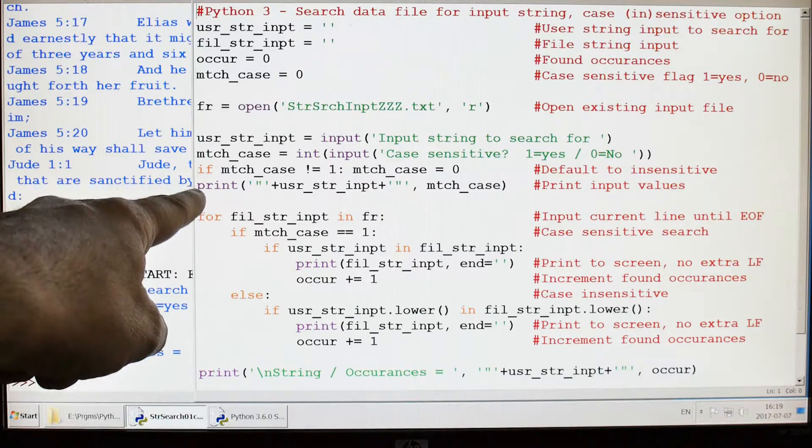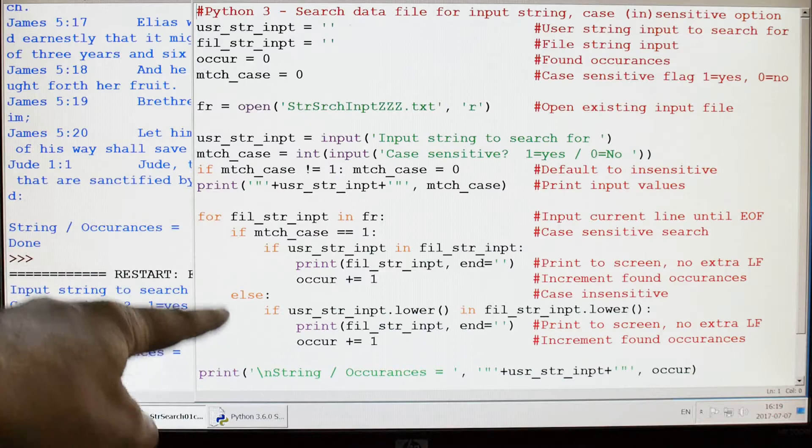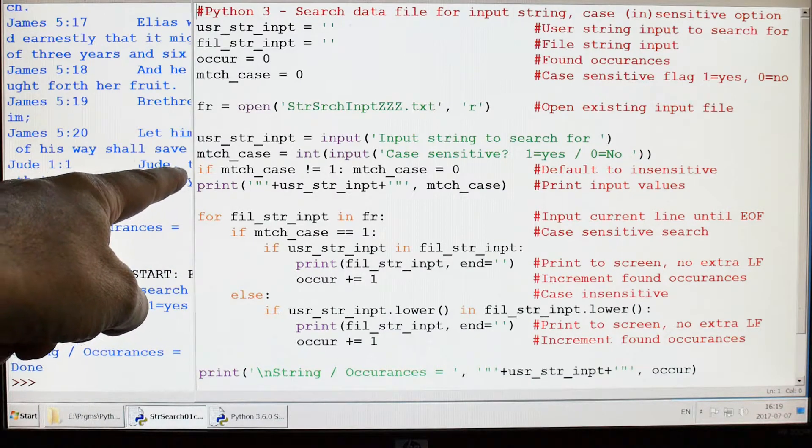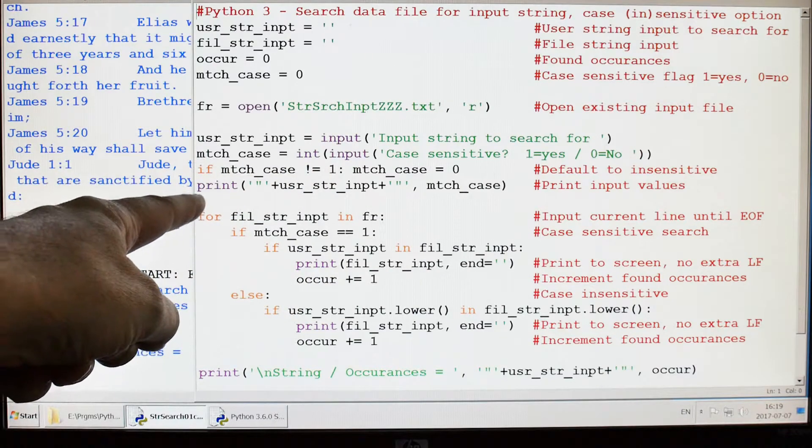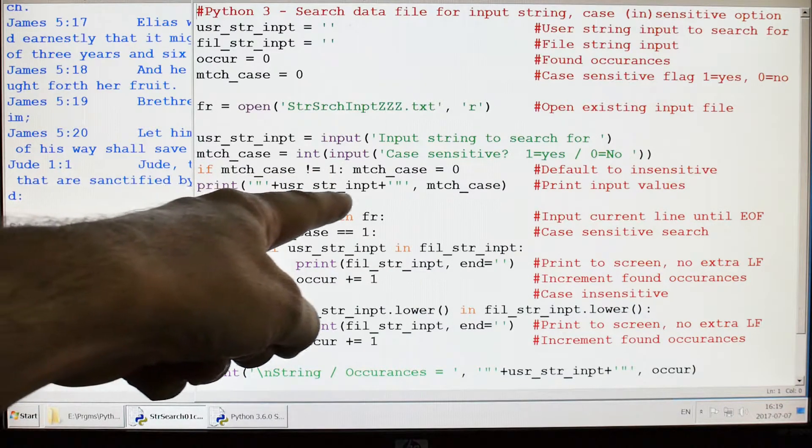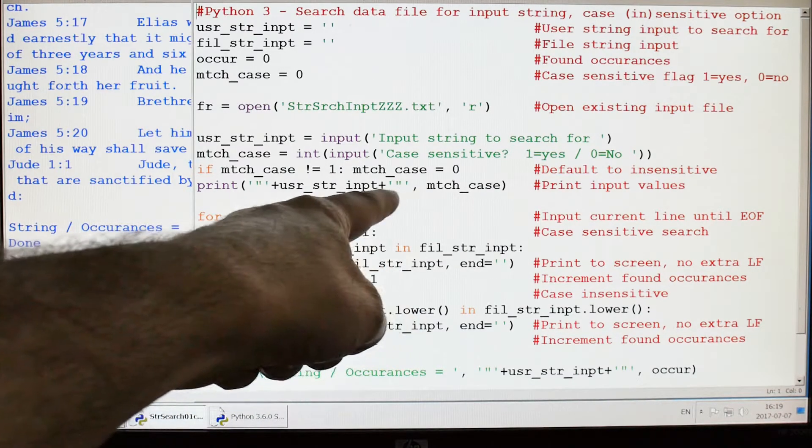Then we have the logic. This determines the default: if the match case is not equal to one, then match case equals one, and then it's going to print the string that the user input plus whether it was a one or a zero in the match case.